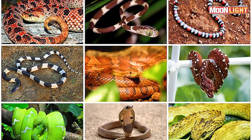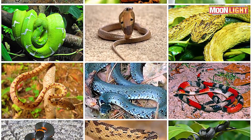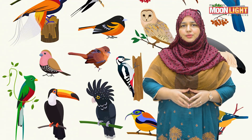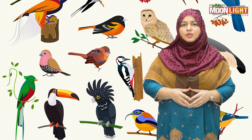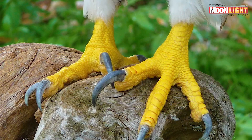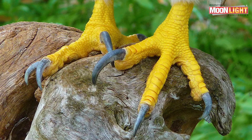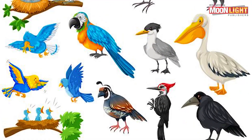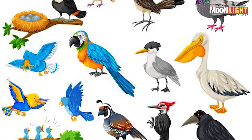Reptiles mostly have four legs, but the snake is one animal that has no legs at all. Birds are warm-blooded animals whose entire body is covered with feathers and they have a beak. Like reptiles, their legs are scaly.